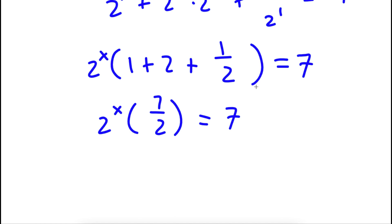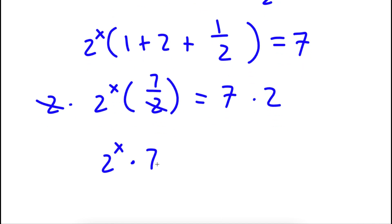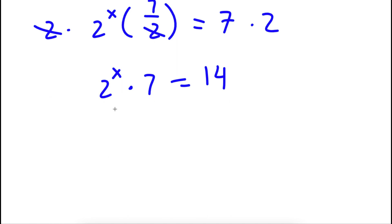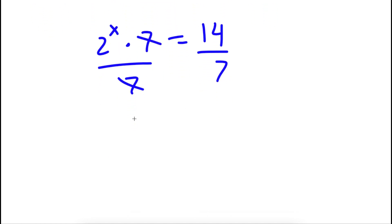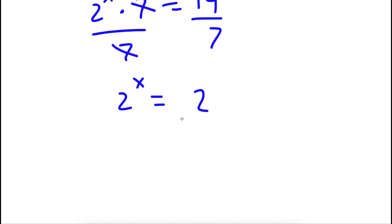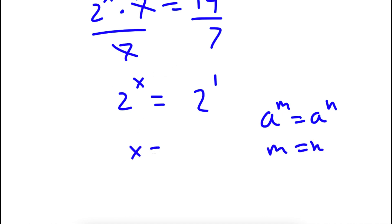So now I have 2 to the power of x times 7 over 2 is equal to 7. If I multiply by 2 on both sides, these two cancel out. Now I'm left with 2 to the power of x times 7 is equal to 14. If I divide by 7 on both sides, these two cancel out, and I'm left with 2 to the power of x is equal to 2, which is the same as 2 to the power of 1. If a to the power of m equals a to the power of n, then m equals n, so x is equal to 1.